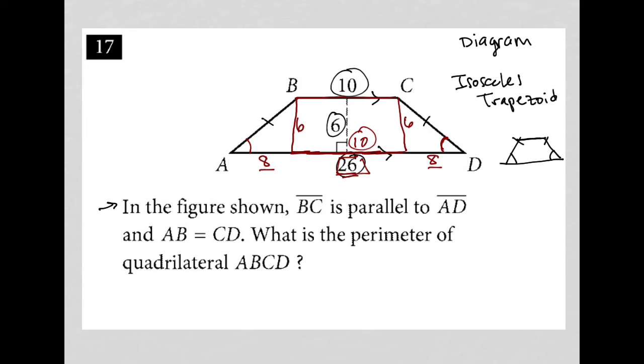So now I have a right triangle where the height is 6, the base is 8. The question is asking for the perimeter, so all I really need to know is this hypotenuse and I'm pretty much finished with this question.